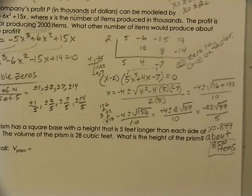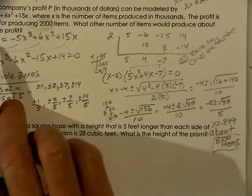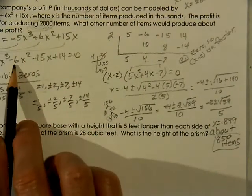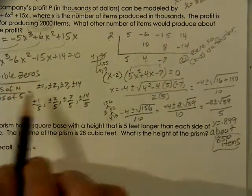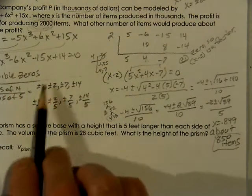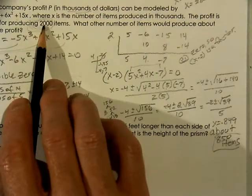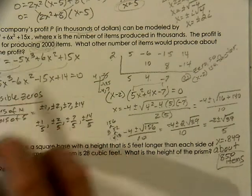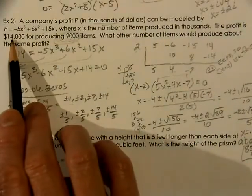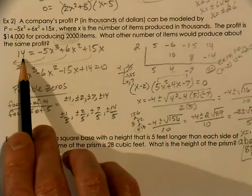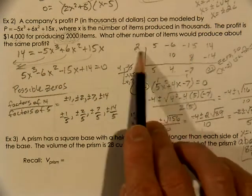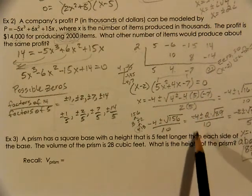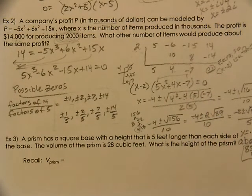So what did we just do with that problem? First we started with our equation with the information it gave us. We moved everything to the same side. We knew there were possible zeros and the one that we chose was the 2 because they told us that with 2,000 items we get $14,000. So we are at $14,000.